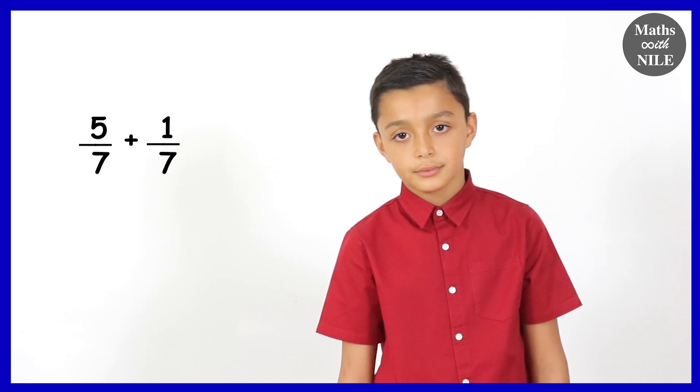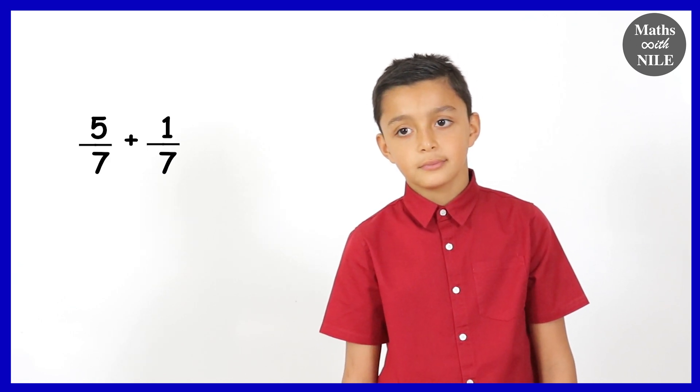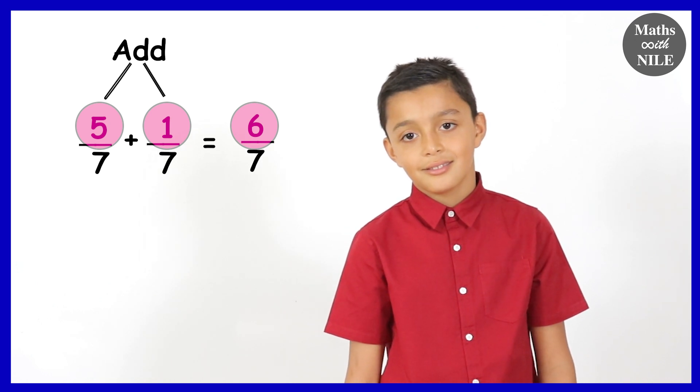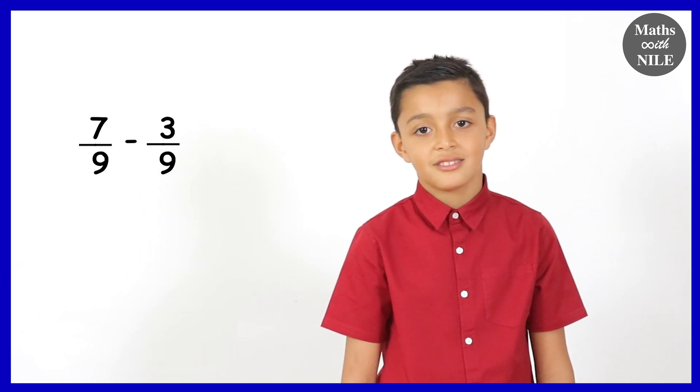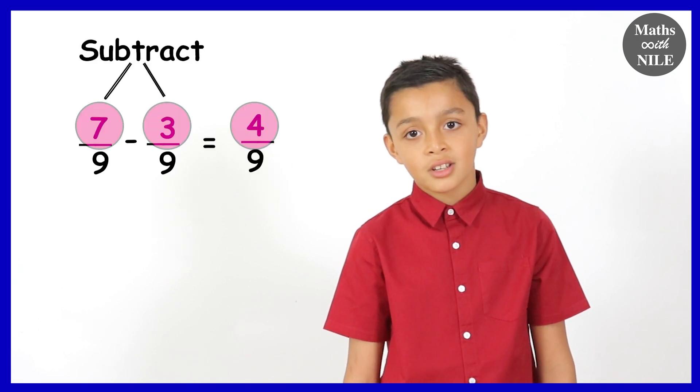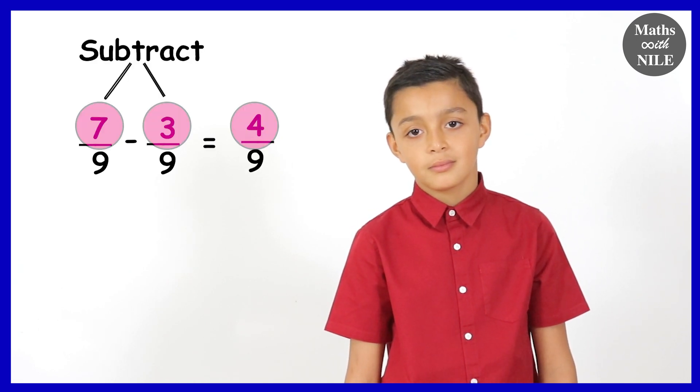Five sevenths plus one seventh. Six sevenths. Great. Seven ninths take away three ninths. Four ninths. Good job.